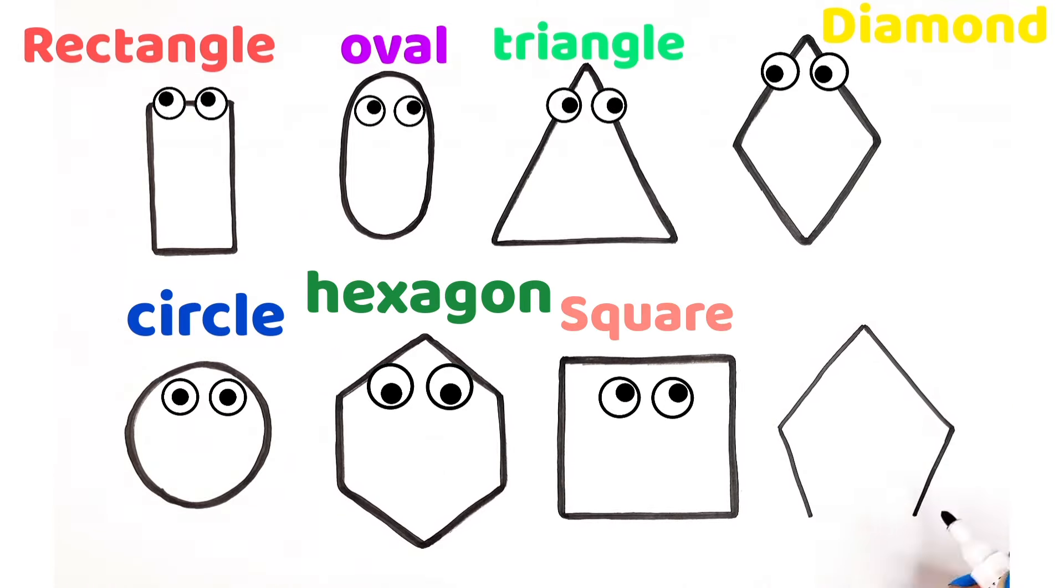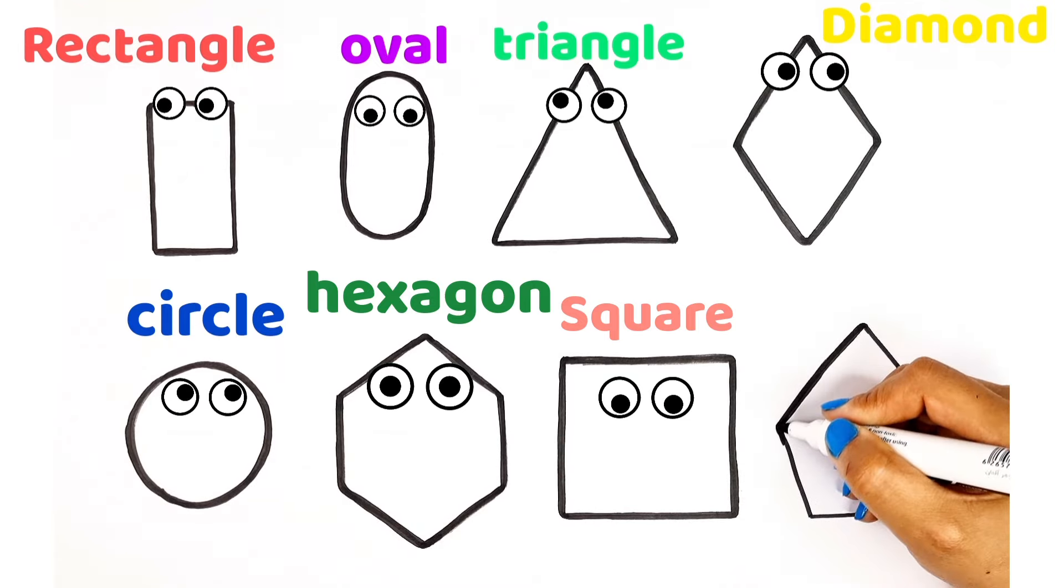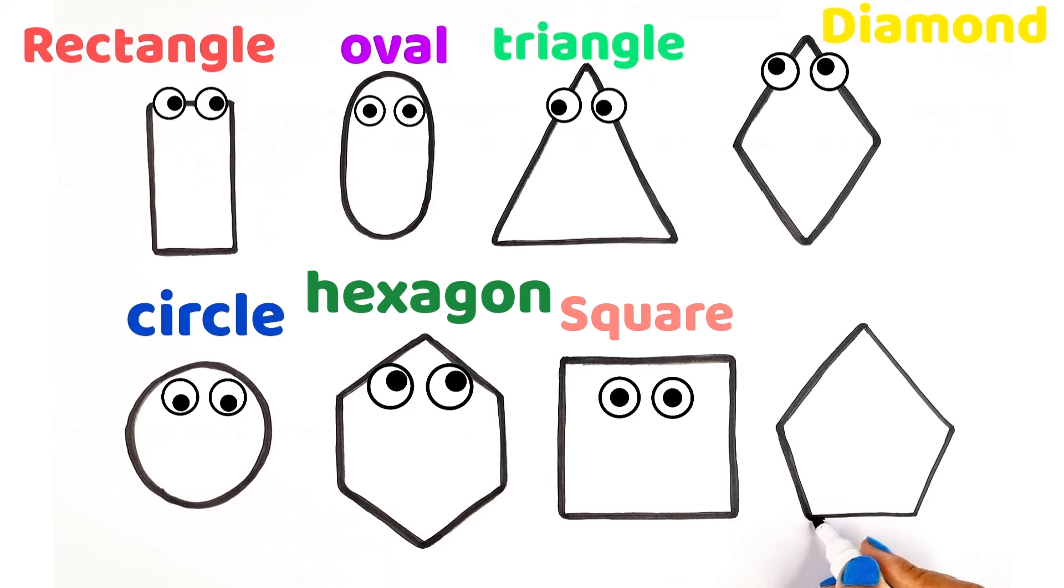The last shape of a pentagon is drawn very similar to a hexagon, but as you can see, there is one line less than it. Guys, when you see a pentagon, you will definitely remember drawing a house.